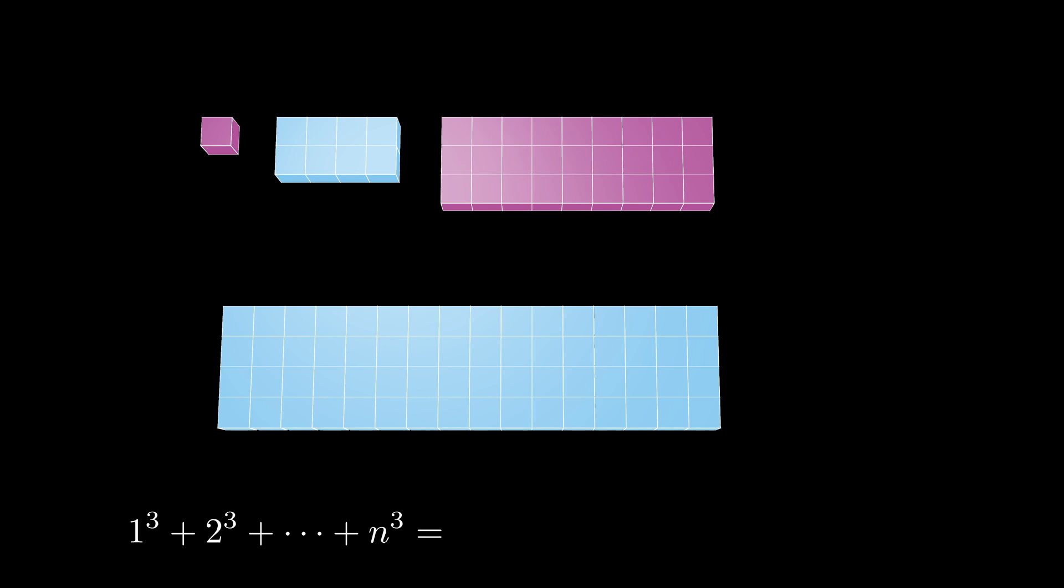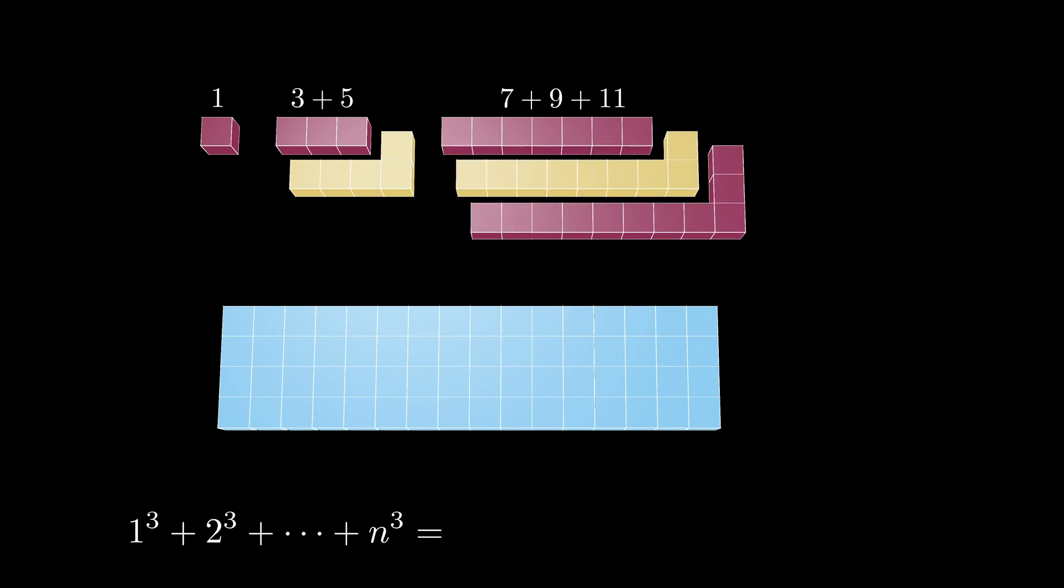The first rectangle represents the number 1. The second rectangle represents the sum of the two odd numbers 3 plus 5 as shown here. The third rectangle represents the sum of the odd numbers 7 plus 9 plus 11, so each of these rectangles can be decomposed into a sum of consecutive odd numbers.